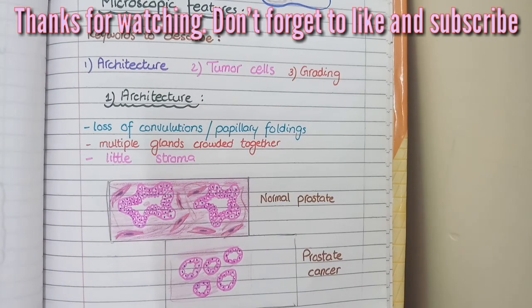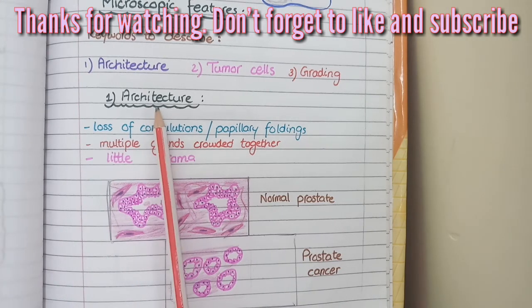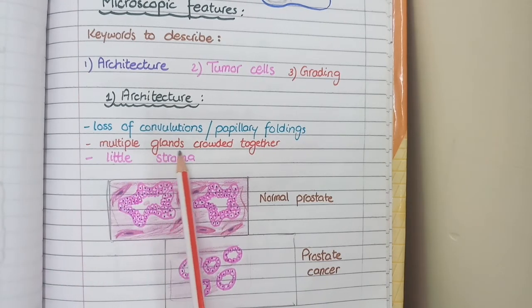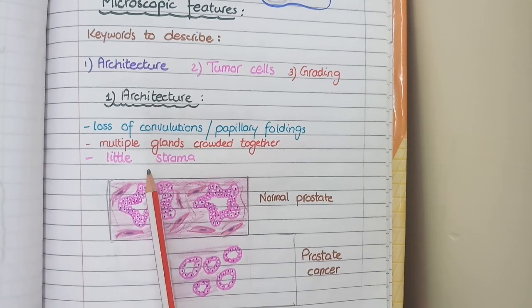Now let's revise the morphological features of prostate carcinoma. Firstly, as far as the architecture is concerned, you see loss of convolutions or papillary foldings, you see multiple glands crowded together and you see little fibromuscular stroma.